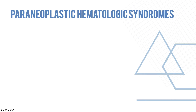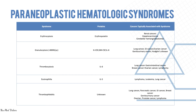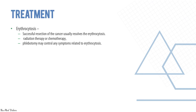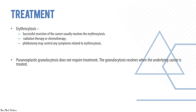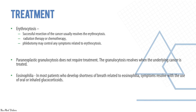Hematological syndromes can also occur as part of paraneoplastic syndromes: erythrocytosis, granulocytosis, thrombocytosis, eosinophilia, and thrombophlebitis. For erythrocytosis, successful resection of the cancer, radiation, chemotherapy, or phlebotomy can help. Paraneoplastic granulocytosis does not require treatment. Patients developing shortness of breath related to eosinophilia respond to oral or inhaled glucocorticoids. Paraneoplastic thrombocytosis also does not require treatment.